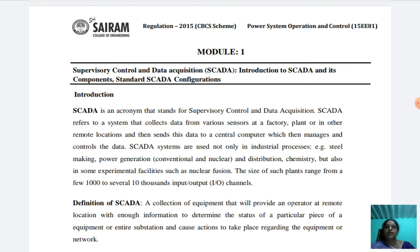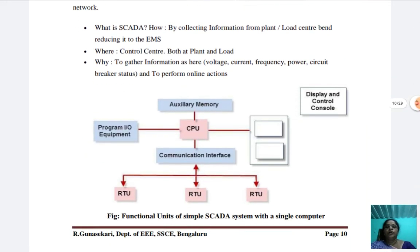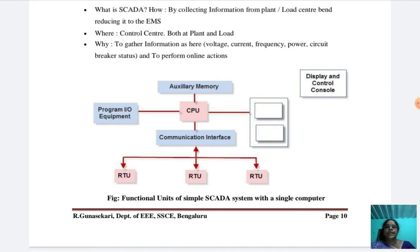Now we study the SCADA components. This diagram represents the functional units of a simple SCADA system with a single computer. The simple SCADA system with a single computer consists of a program, input-output equipment, auxiliary memories, CPU, remote terminal units (RTU), communication interface, and display and control console. These are the main functional units of a simple SCADA system with a single computer.